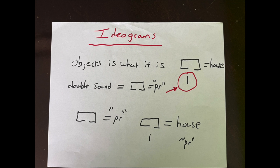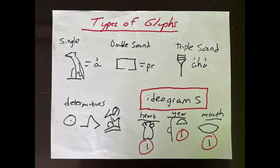All right, why are we back to doodling? Well, it's because we're going over the ideograms. Ideograms are the ones that have the little stroke mark under them that tell you the glyph is what it is.